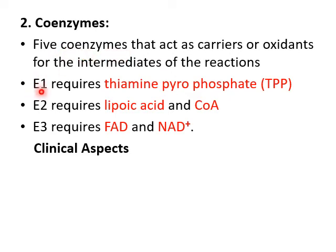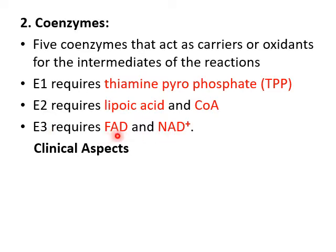E1, pyruvate dehydrogenase or pyruvate decarboxylase, requires thiamine pyrophosphate, a vitamin B1 derivative. E2, dihydrolipoyl transacetylase, requires lipoic acid and coenzyme A — coenzyme A contains vitamin B5 as pantothenic acid. E3, dihydrolipoyl dehydrogenase, requires FAD (riboflavin, vitamin B2) and NAD (niacin, vitamin B3).